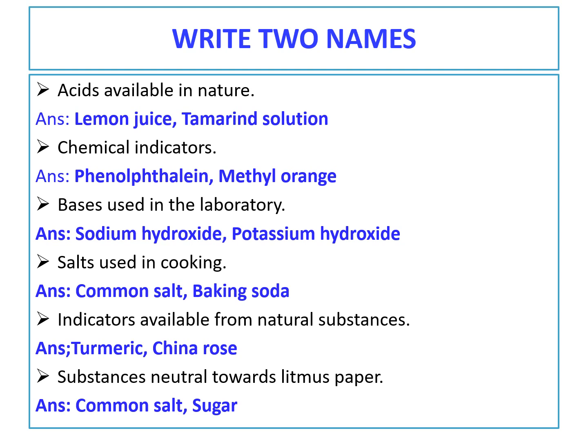Next, chemical indicators. We have already learned about chemical and natural indicators, but here it is asking for any two chemical indicators. First one: phenolphthalein. Second one: methyl orange. For natural indicators, the answers are turmeric paper and china rose petals.